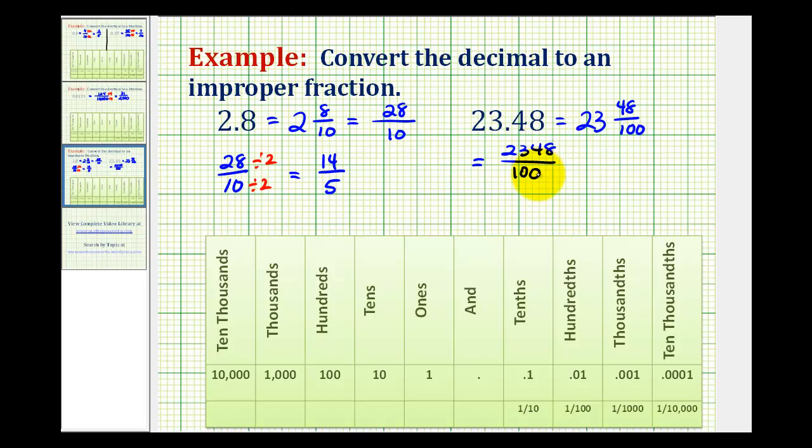But now again, we do want to simplify this. And these are both divisible by 4, so we'll divide the numerator by 4 and the denominator by 4. 100 divided by 4 is 25, and 2,348 divided by 4 is 587.